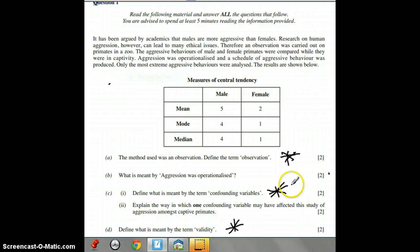Define what is meant by the term confounding variable. A confounding variable is any variable other than the IV in an experiment that has an effect on the dependent variable. You might want to give an example, but you don't have to refer to the scenario. What do we mean by the term validity? We can talk about generalizability and ecological validity, internal validity, a whole range of things.